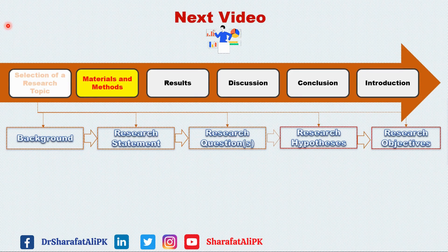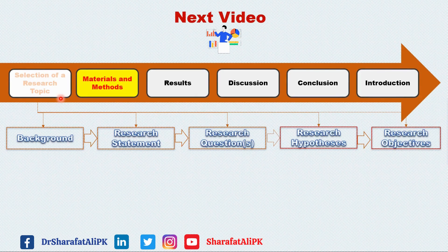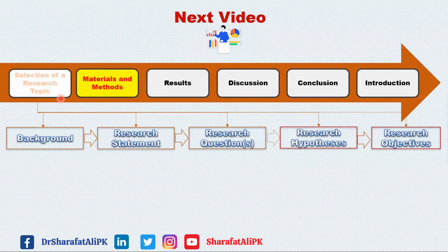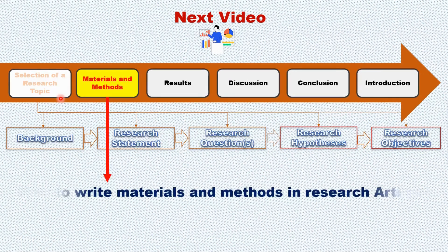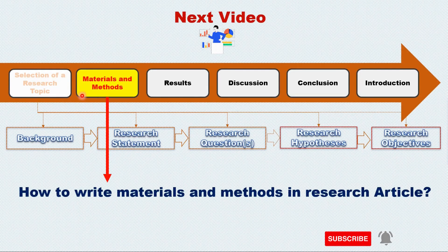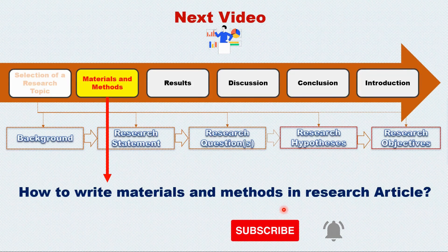In this video, we discussed the steps researchers should follow after the selection of a research topic to reach the materials and methods section. Before starting to write the materials and methods section, the author should work on the background research, statement of the problem, research questions, research hypotheses, and research objectives. In the next video, we will discuss how to write the materials and methods section. Please subscribe to the channel and press the bell icon for updates on new videos. Thank you.